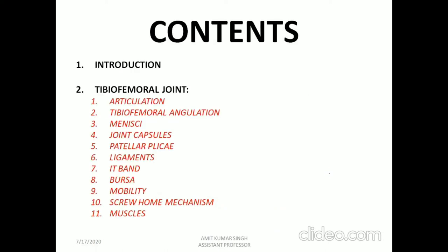These are the contents which I am going to discuss in the knee complex chapter. The knee complex mainly consists of the tibiofemoral joint and patellofemoral joint. For the tibiofemoral joint, I will cover articulation, tibiofemoral angulation, meniscus, joint capsules, patellar plica, ligaments, IT band (iliotibial band), bursa, mobility, and the screw home mechanism.